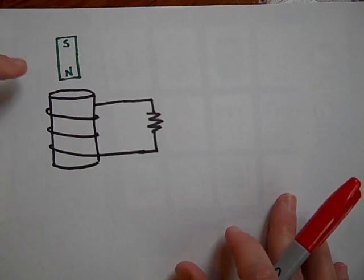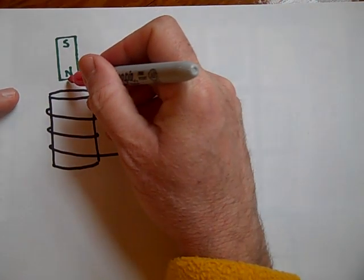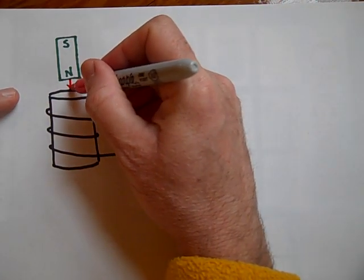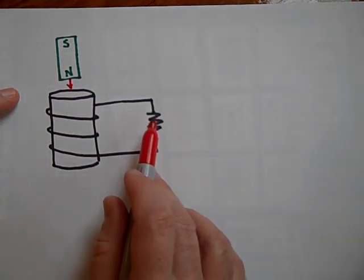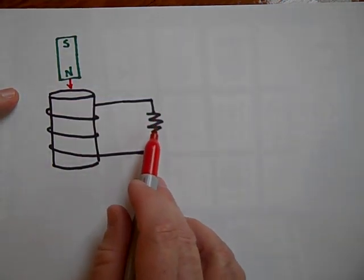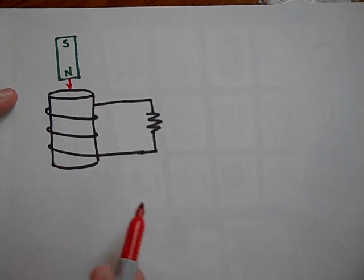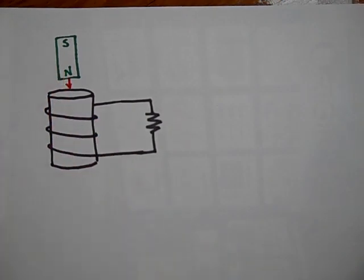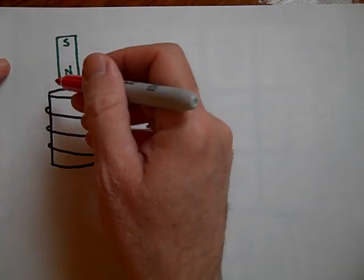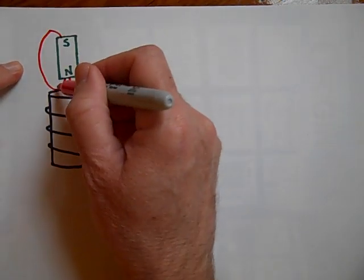Here comes a magnet. It's got its north end this way. It's heading down. Which way will the current be induced through this resistor — up or down? Go ahead and try to figure out if this magnet's coming down. So if this magnet's coming down, it's got a field that looks like this.